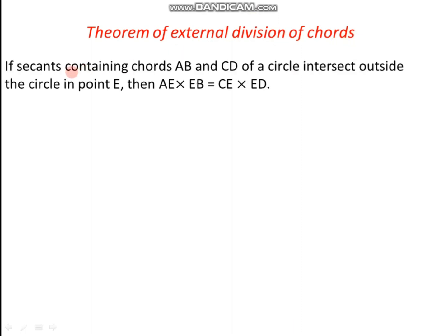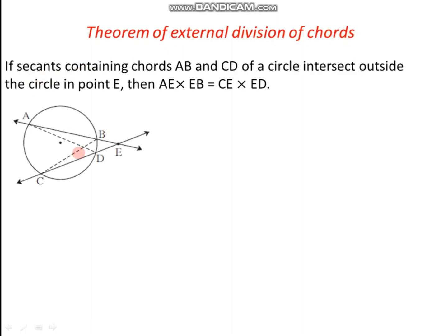Let us have the statement of the theorem. Consider the diagram given. If secants containing chord AB and chord CD of a circle intersect outside the circle at point E, then we have to prove that AE into EB is equal to CE into ED.